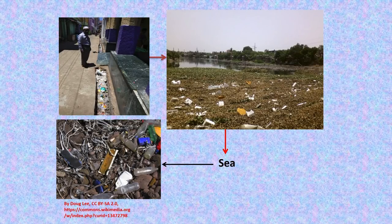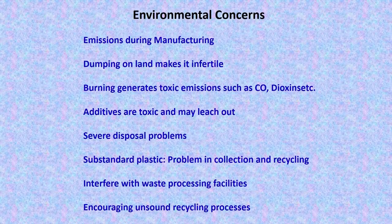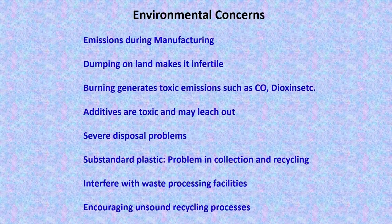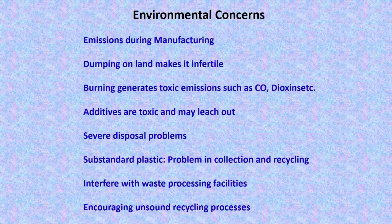From the drains, plastic goes into the rivers, from the rivers into the sea, and from the sea it comes back to the beaches. There are many environmental concerns with plastic. First, there are emissions during manufacturing. Second, dumping plastic on land makes the soil very infertile — it reduces the porosity of the soil medium, prevents water from flowing easily in the subsurface, and leads to soil infertility.